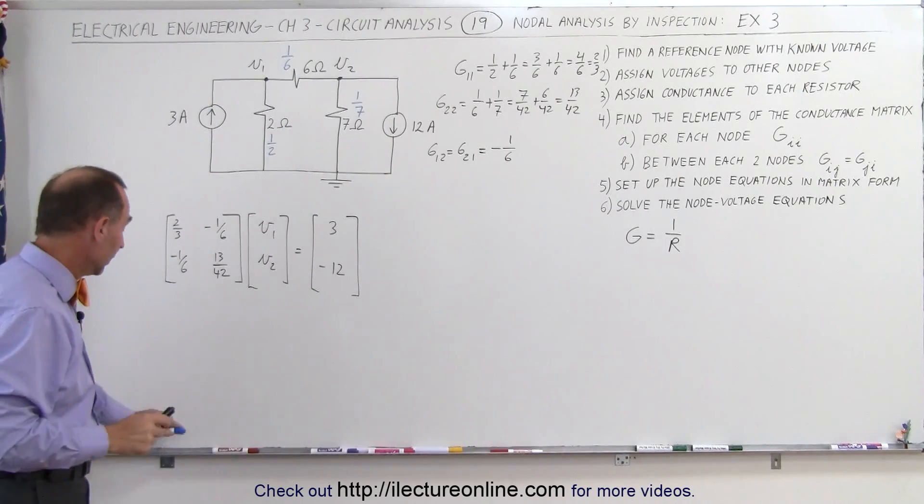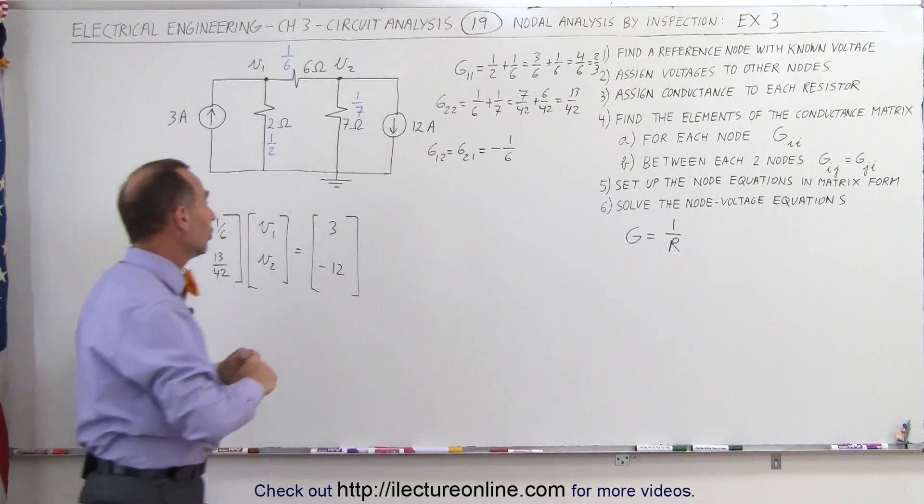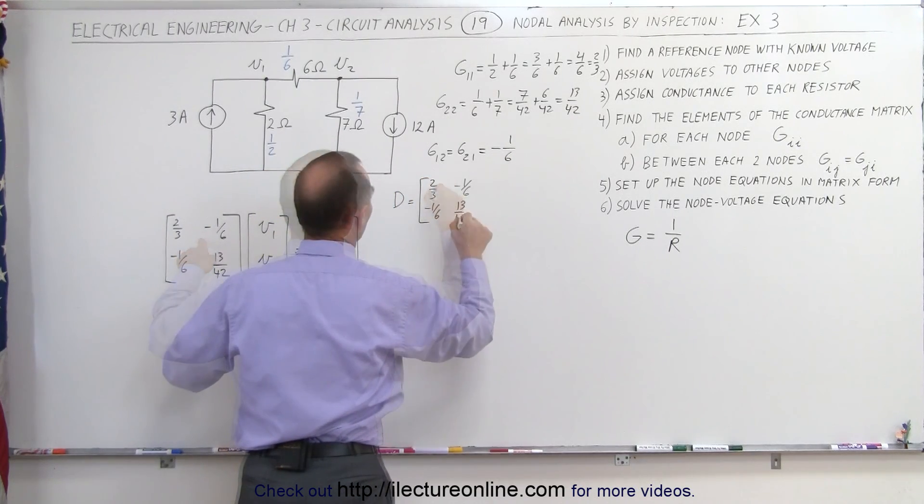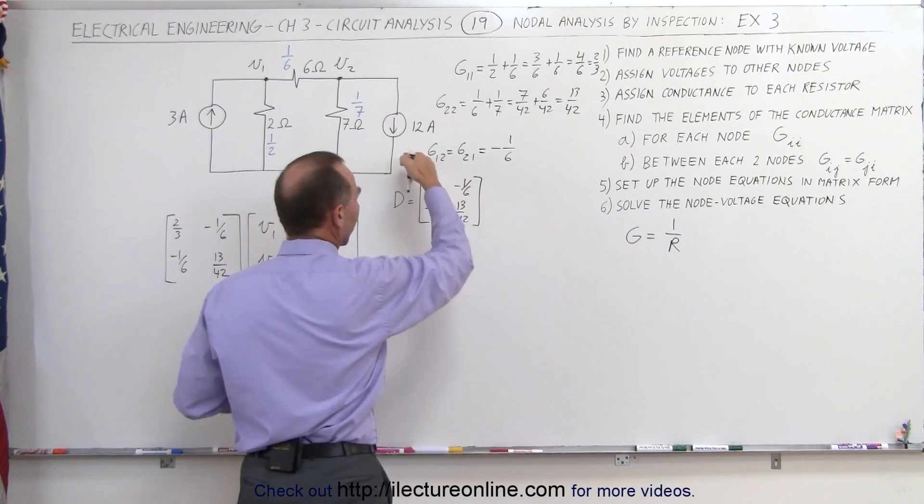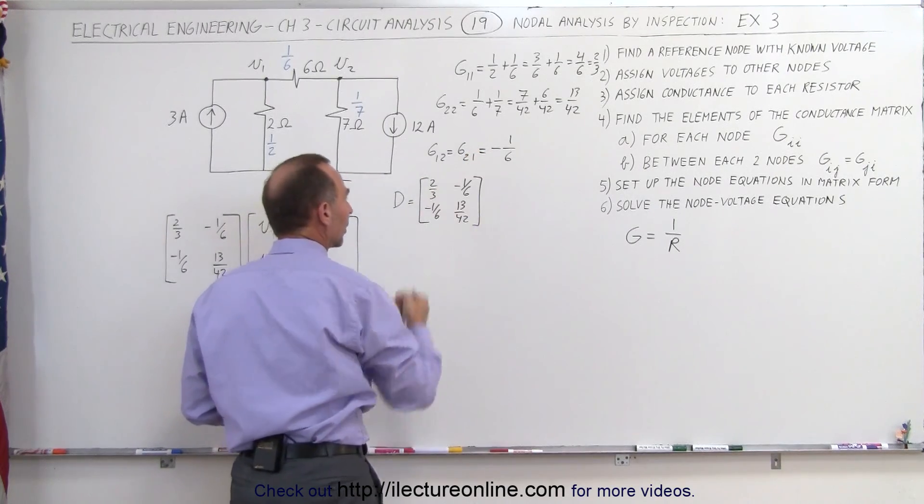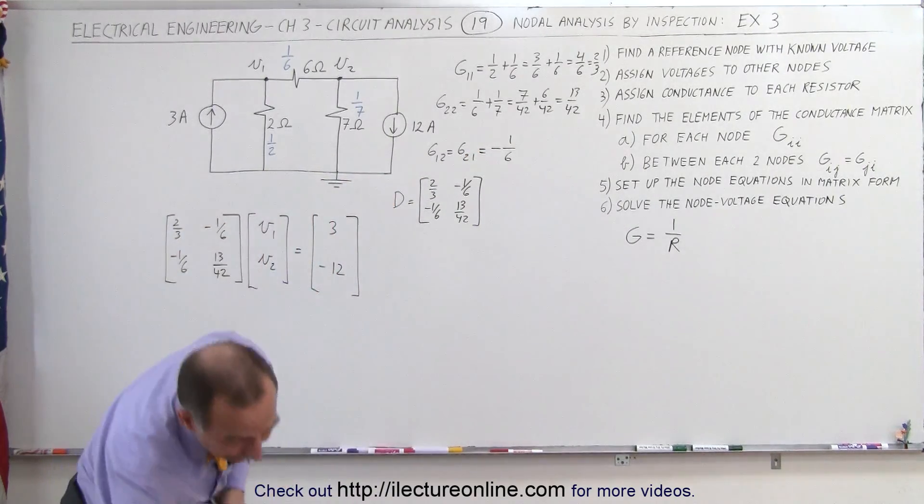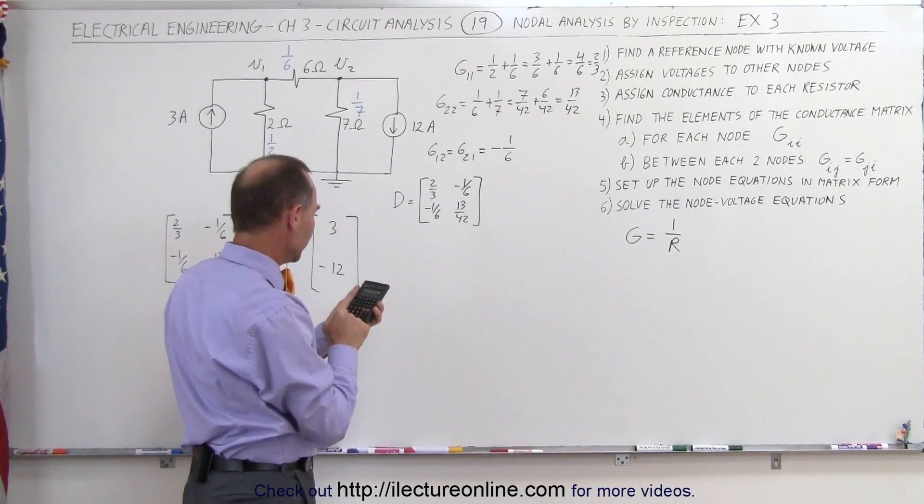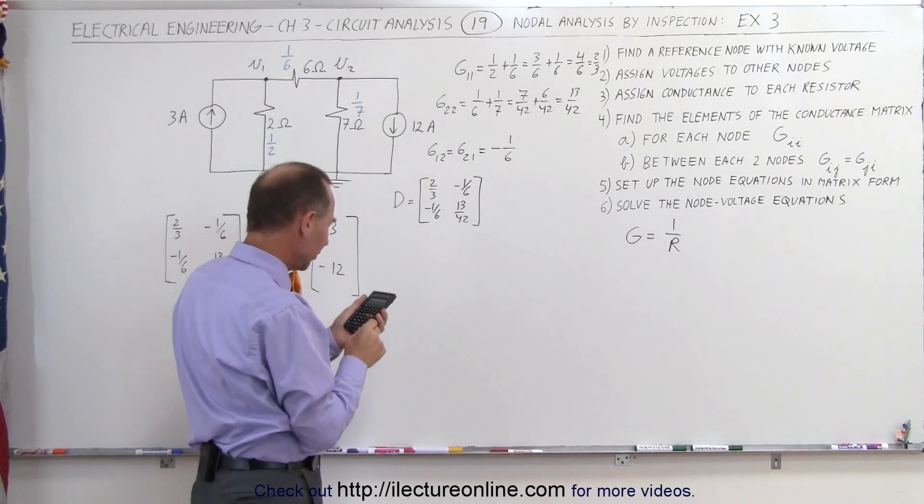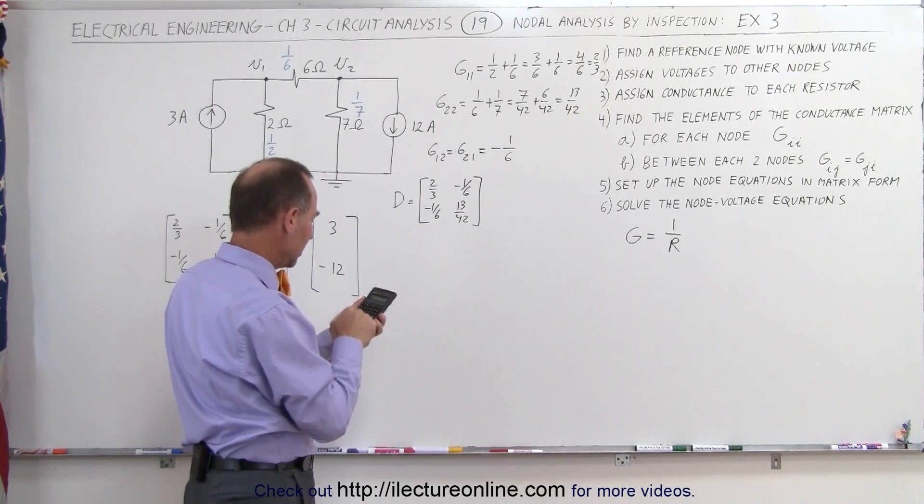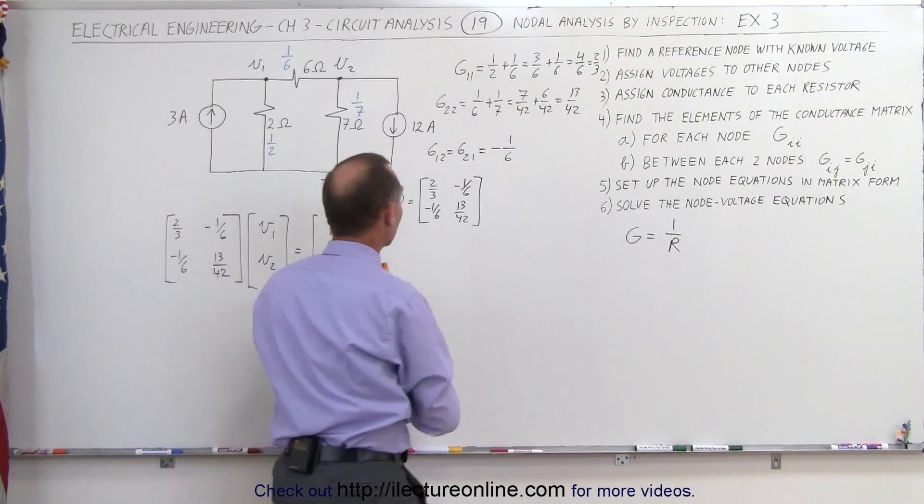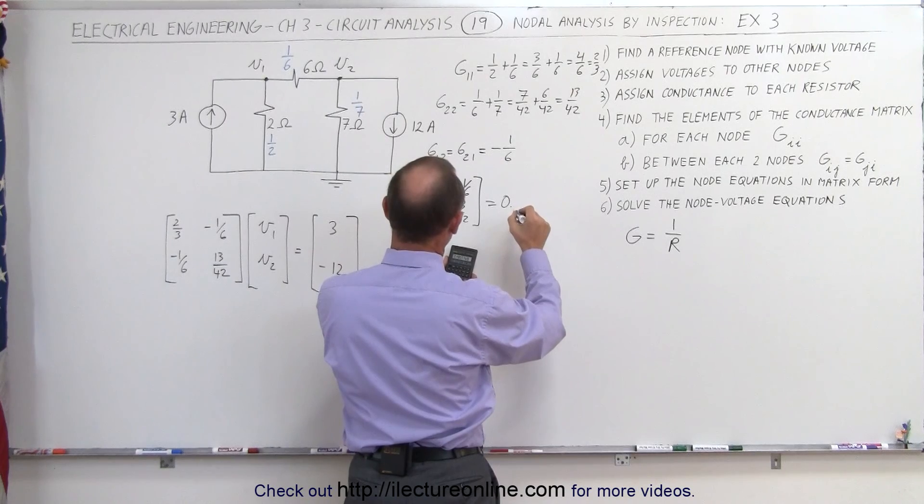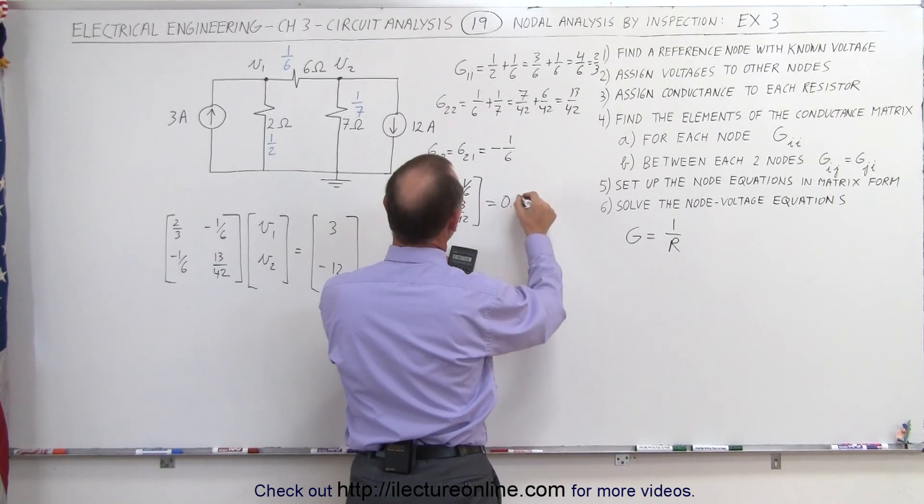Now we're ready to solve the problem. We're going to first find the determinant. The determinant is equal to 13 over 42, so we multiply these elements together and then subtract the product of those two. You probably need a calculator for that. That's 26 divided by 3 divided by 42, and we subtract from that 1 divided by 6 squared, and the determinant of this is equal to 0.1786. I'll just write as 0.179.